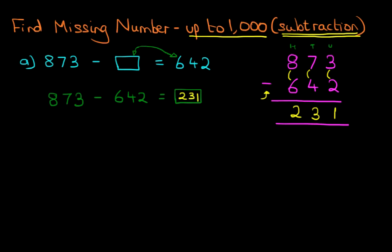We can write this in the original question. 873 minus 231 equals 642. So the missing number was 231.